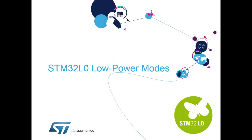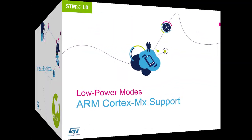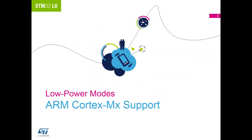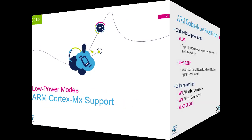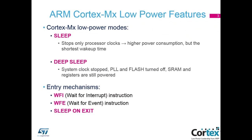Hello, in this section we are going to look at the STM32 L0 Low Power Modes. First, let us look at what ARM provide for us in the Cortex-M Core. All Cortex-M Cores have two low power modes: sleep and deep sleep.